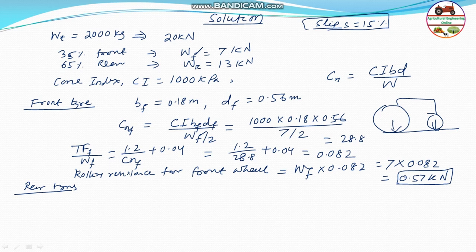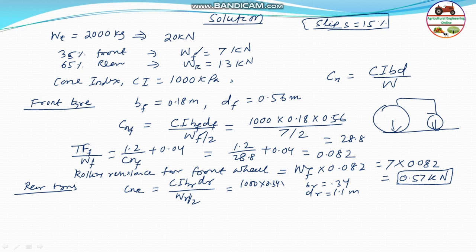Similarly, for the rear tires, the wheel numeric CNR = (CI × BR × DR) / (WR / 2). The rear tire width BR = 0.34 m and the rear tire diameter DR = 1.1 m. So CNR = (1000 × 0.34 × 1.1) / (13 / 2) = 374 / 6.5 = 57.54.